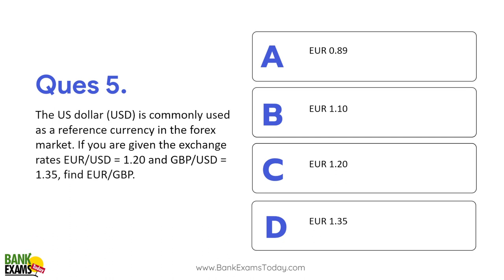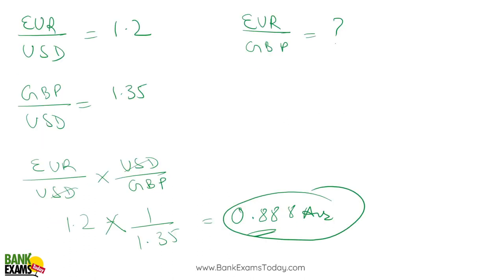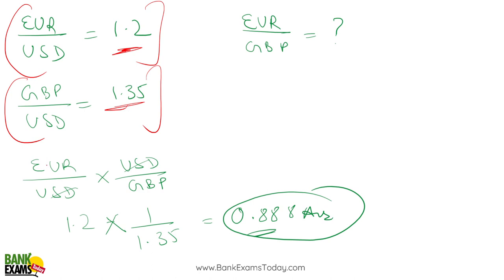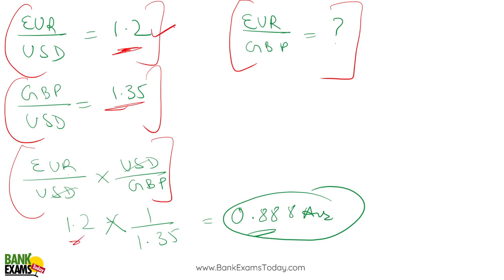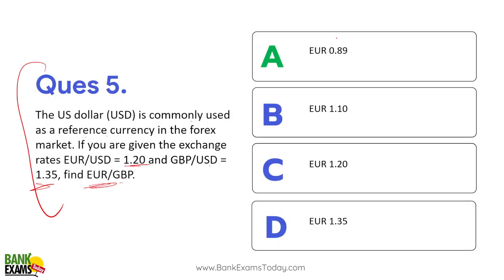That's your homework — you should do this yourself as this question appears repeatedly in papers. Pause the video and try to solve it yourself. The US dollar is commonly used as the reference currency in the forex market. Given: USD per euro = 1.2, USD per GBP = 1.35 — find GBP per euro. Euro divided by USD gives 1.2; reverse USD/GBP gives 1 divided by 1.35. Multiply: 1.2 × (1/1.35) = 0.888 or approximately 0.89 — that is your correct answer.